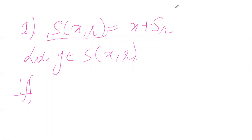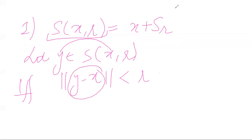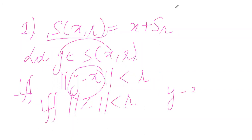We will give it a name: call it norm of z, if and only if norm of z is less than R, where y minus x equals z — so y minus x is called z. If and only if, I will give them a position. What is the value of y? Since we are looking at all y, y equals x plus z, and the norm of z is smaller than R.